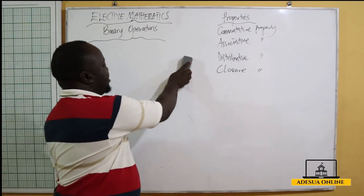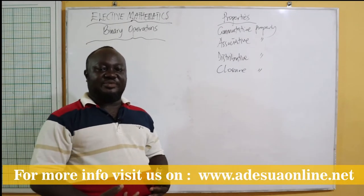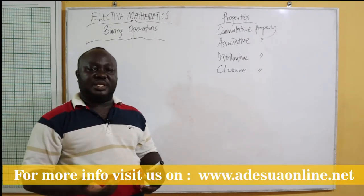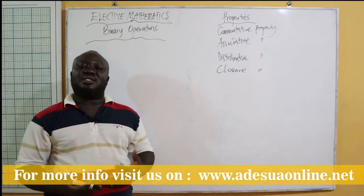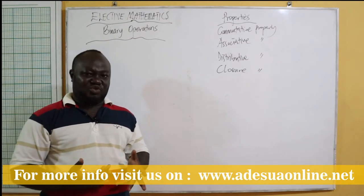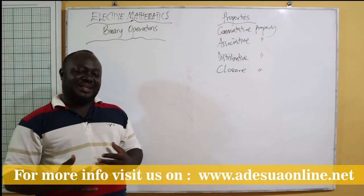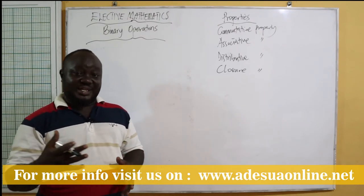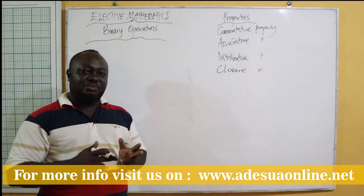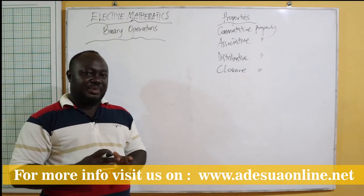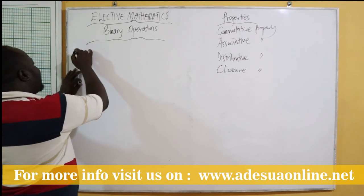A binary operation is said to be commutative when a★b is equal to b★a. In real life, addition and multiplication are commutative. For example, three plus two equals two plus three, and five times three equals three times five — we get fifteen. So addition and multiplication are commutative under binary operations.